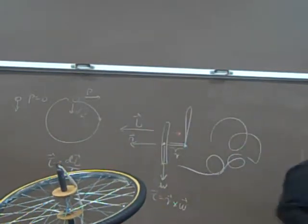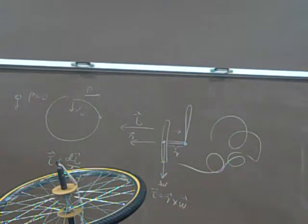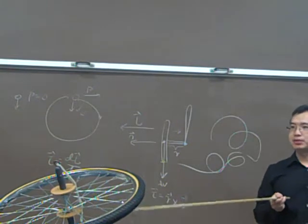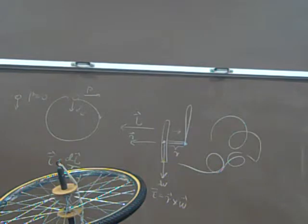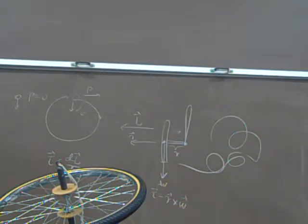Another application is the precession of the Earth. The Earth has rotation about its own center, and on the other hand, it experiences the gravitational force from the Sun. Just like this wheel, the torque produced by the gravitational force will make the Earth precess. So the direction of the Earth's rotational axis actually changes — it keeps wobbling like that. Many years ago it may have pointed to one particular star, but now it's pointing to another star.